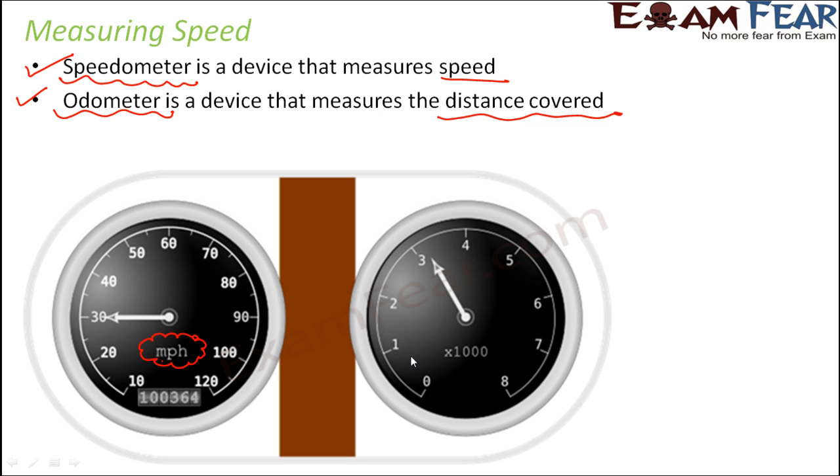This is the odometer which will measure the total distance. Here you have the values like one, two, three, four, and five, but whatever this hand indicates gets multiplied by thousand to give you the total distance covered. That's the difference between speedometer and odometer.